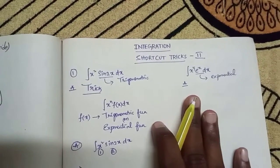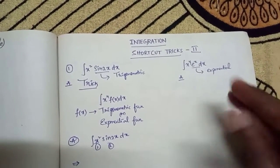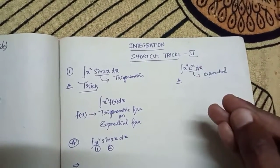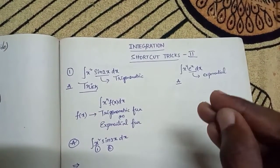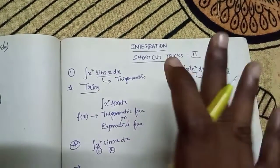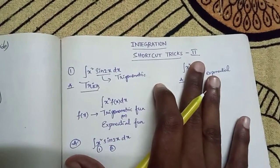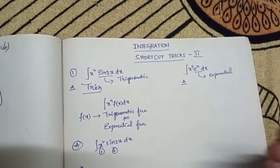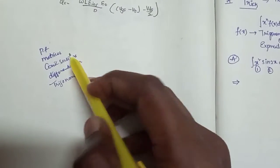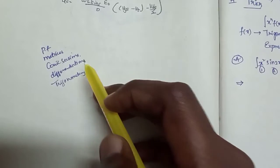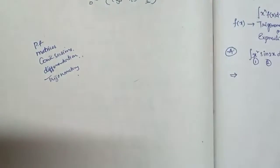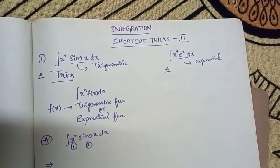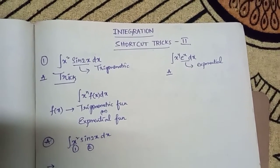Hello guys, welcome back to our channel AskAbino. Friends, if you are in E-SIT or M-SIT and are interested, most students fail to find answers and have many doubts. In this video, we cover shortcut tricks — this is the second part. You already have partial fractions, matrices, coding sections, differential equations, differentiation, and trigonometry covered in the first part. Click the 'i' button or check the description.